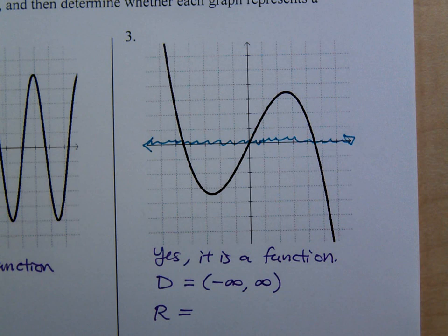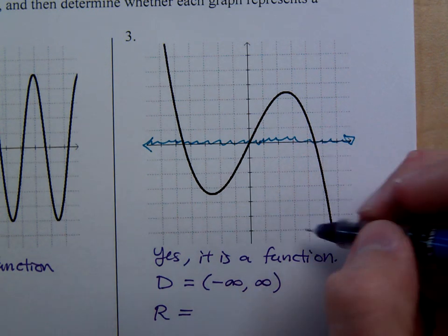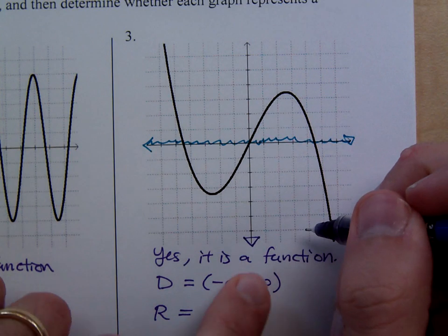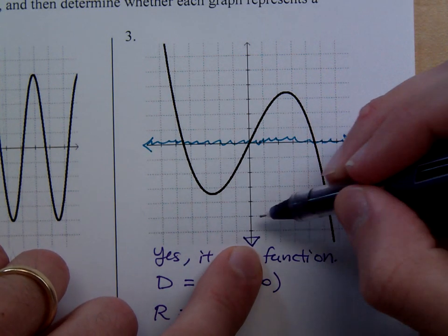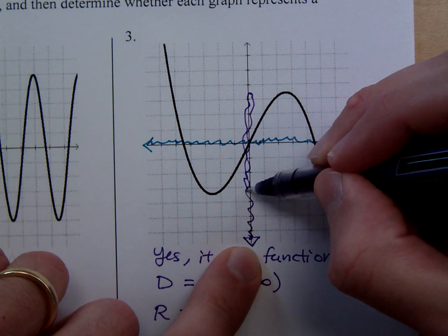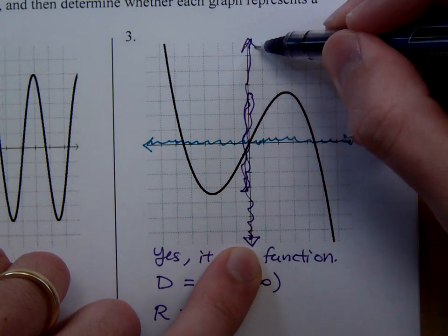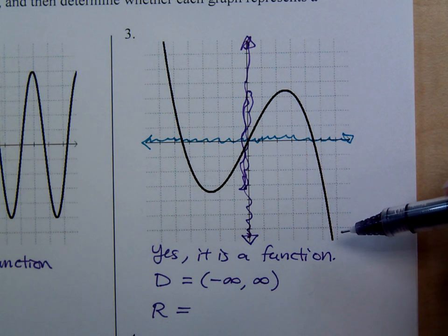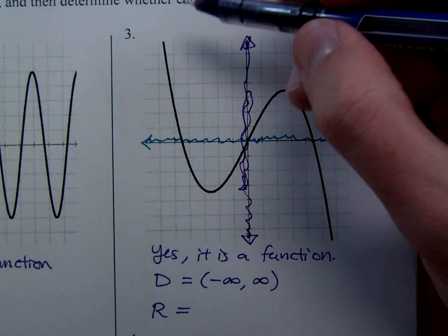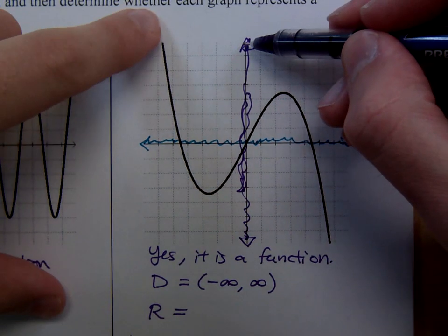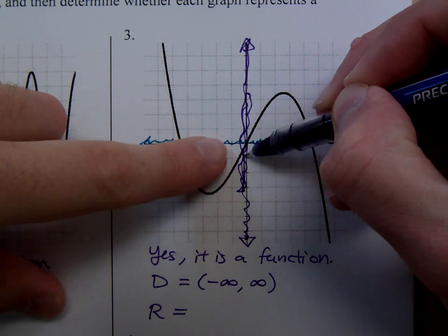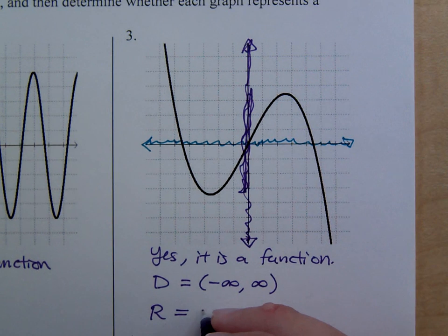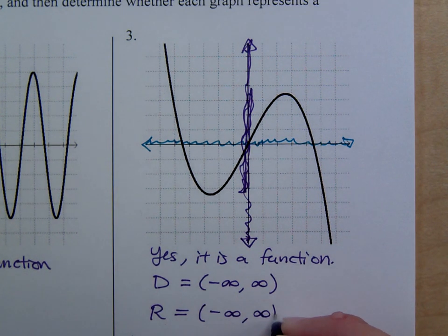What about the range? If you look at this graph, it's going all the way down, then up, then down, then up — that ends up including everything. Going from least to greatest, it goes from here down, up, and then down, so it includes all y-values. So this range is also all real numbers. It's all a matter of what values are used to make the picture.